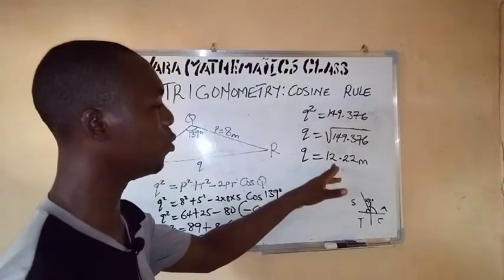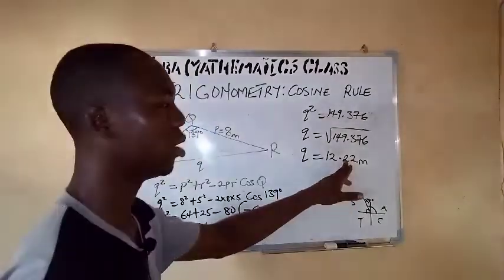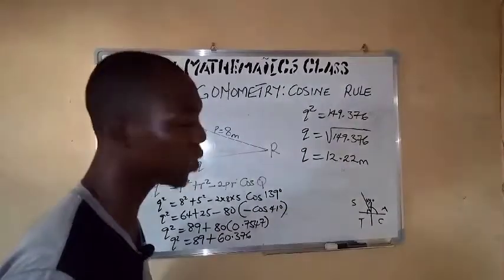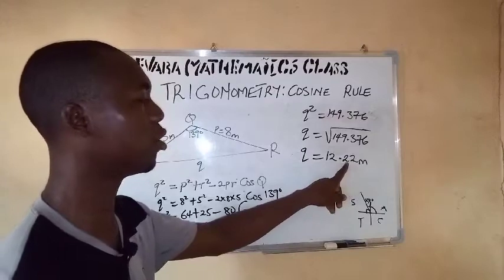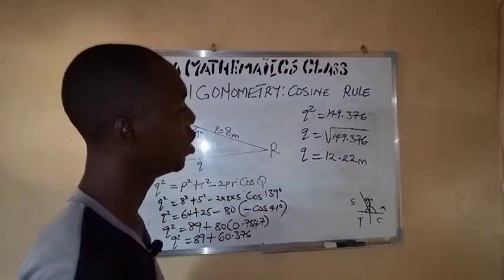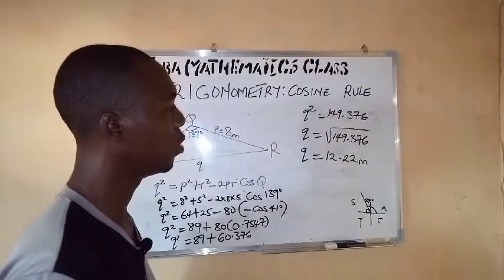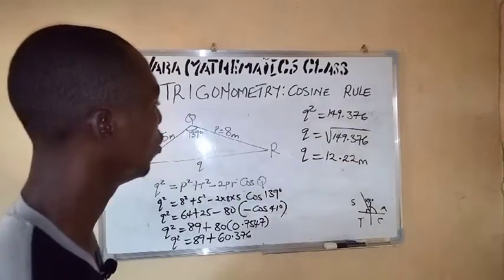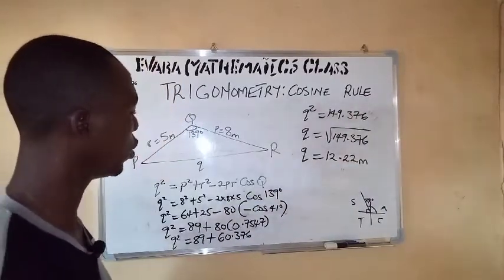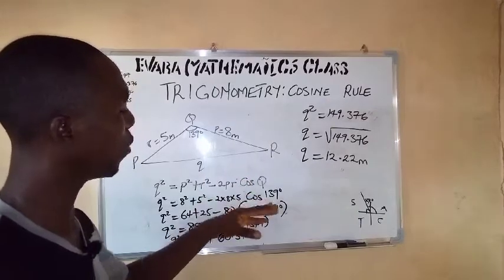So our q now is 12.22 meters. Now depends on what the equation asks you to do. To one decimal place is going to be 12.2 meters, and if it is two significant figures you have 12 meters because the next number is not up to five. So whatever instruction or value you are asked to give will depend on what you have.